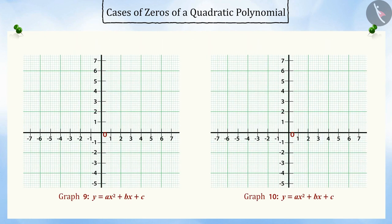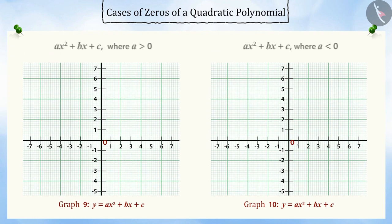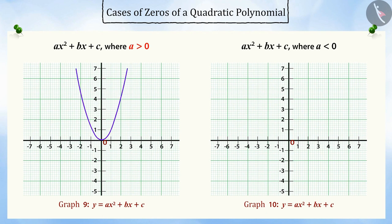Can you tell in which case the graph of a quadratic polynomial will be opened upwards or downwards? If a is greater than zero in the quadratic polynomial ax squared plus bx plus c, then the parabola will be opened upwards. If a is less than zero, then the parabola will be opened downwards.